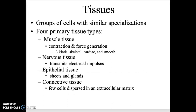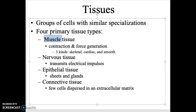Tissues are groups of cells working together to do similar things. There are four primary tissue types we'll focus on. Muscle tissue is muscle — there are different types. You're most familiar with skeletal muscle, but there's also cardiac muscle — the heart muscle — and smooth muscle found in your digestive system and in your arteries.